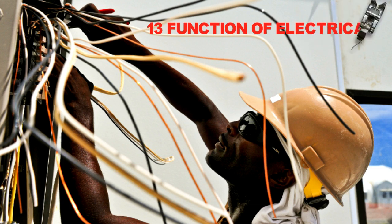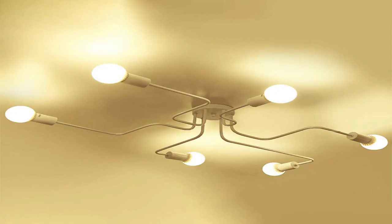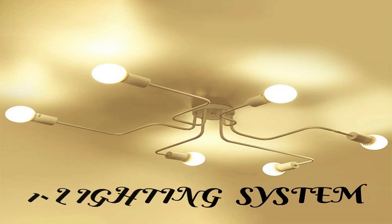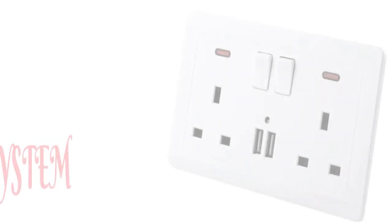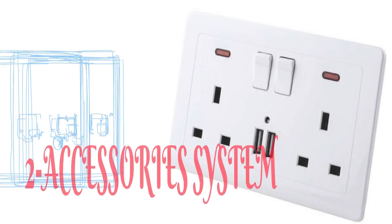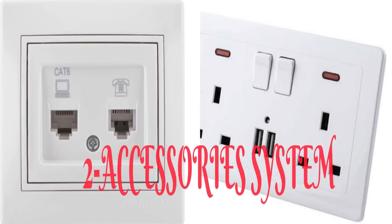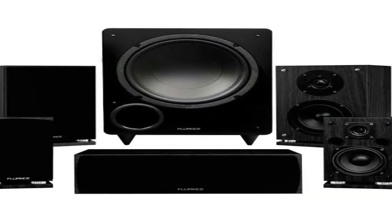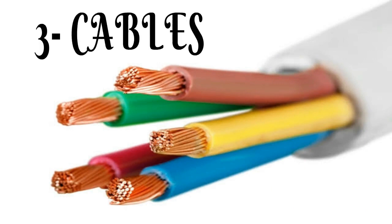Now I would like to explain the functions of the two engineering specializations in building services. Starting with the electrical engineer: electrical engineers in building services have 13 major functions. One: lighting systems — whether designing, consultancy, supervision, or testing and commissioning, the engineer must address the lighting system. Two: accessory systems — there are two forms: high power systems, which are mainly sockets and outlets, and low power systems, which cover CCTV, telecommunication, intercom, and sound and audio systems.